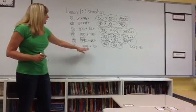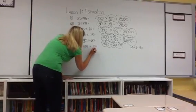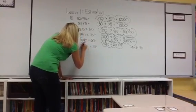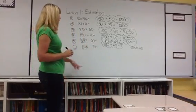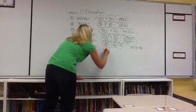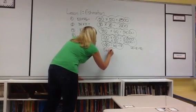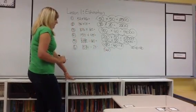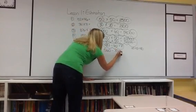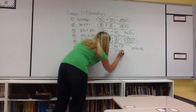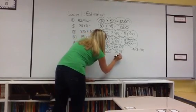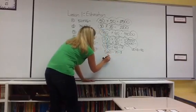Alright, 574 divided by 73. Again, I'm going to think of this as 7. And I'm going to draw a box around the first two digits. And I know that 7 times 8 is 56. So I'm going to change the 574 to 560 divided by 70. And I know that 7 times 8 is 56, so 8 times 70 is 560.